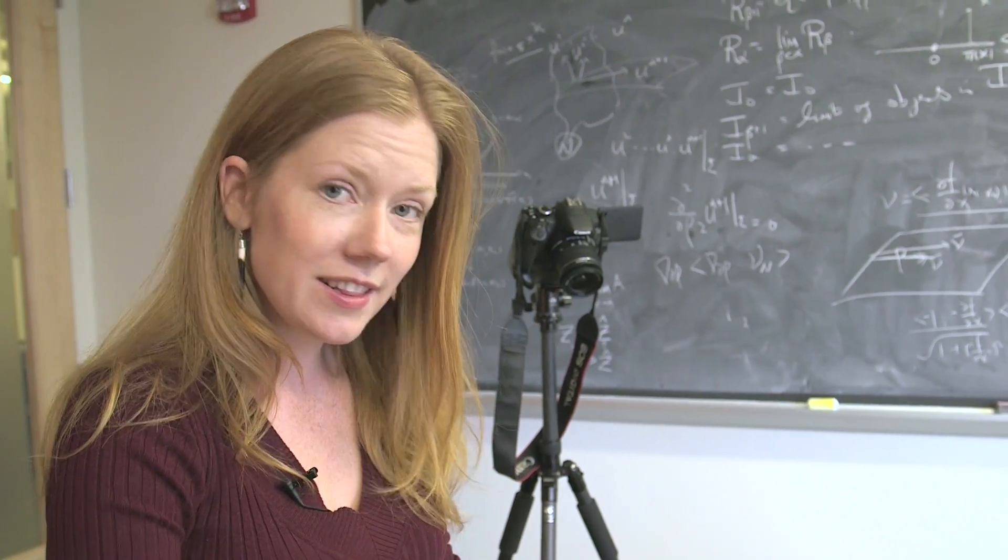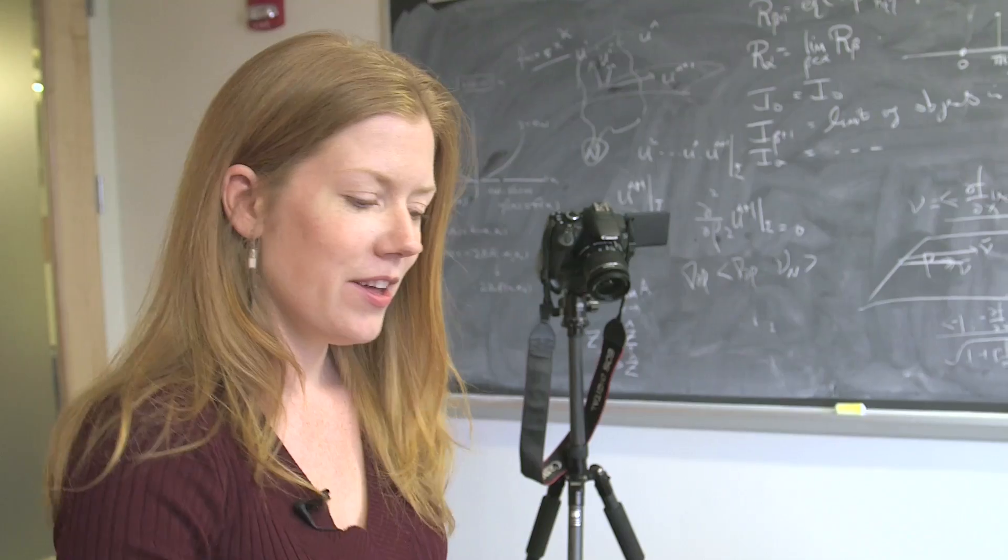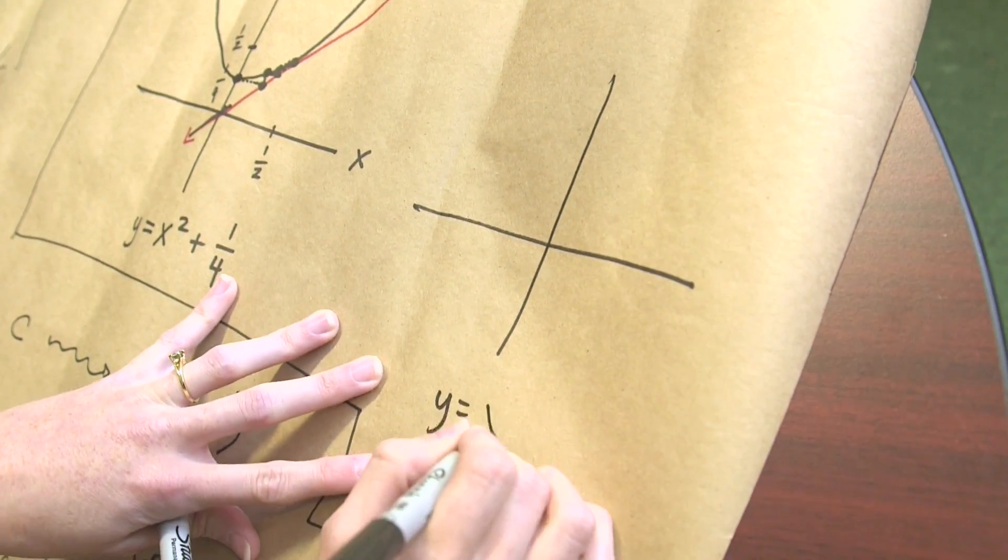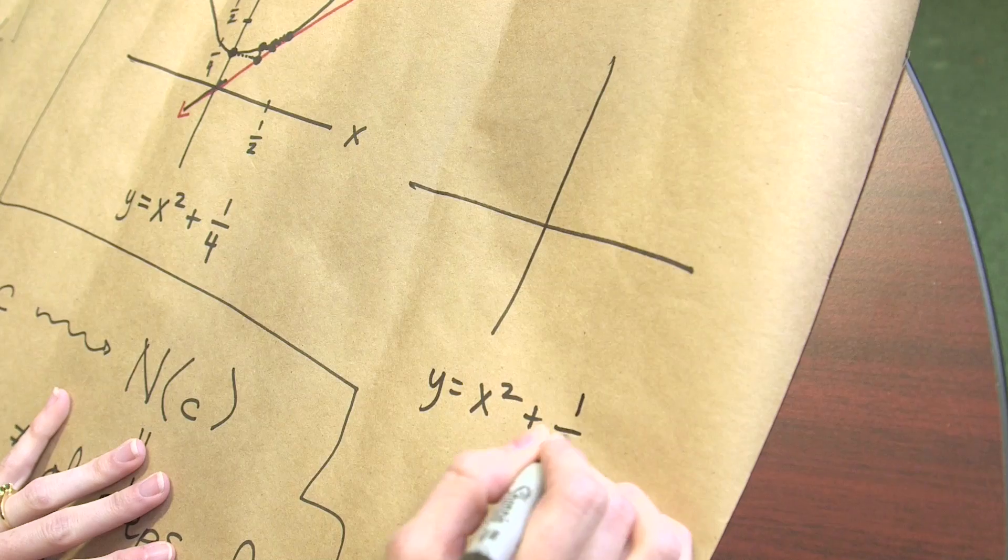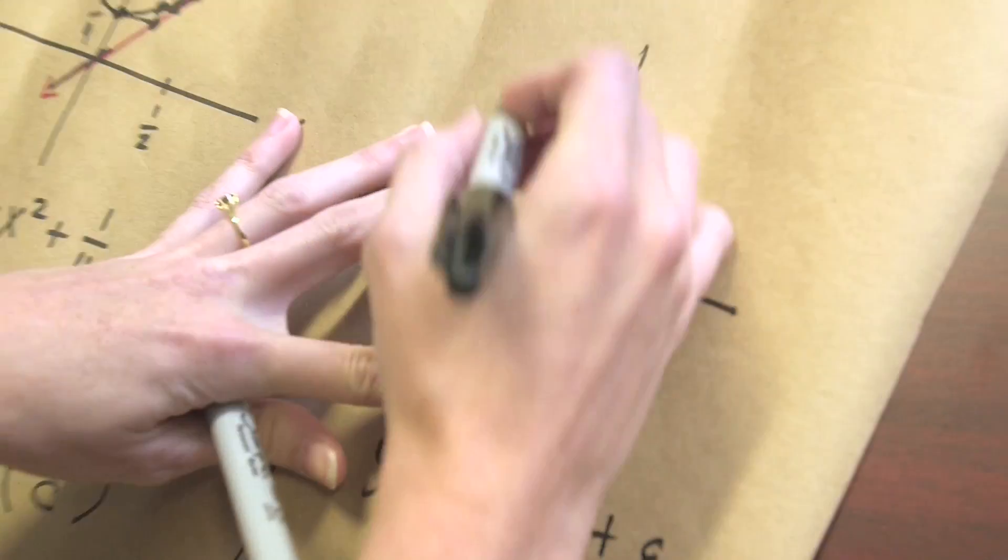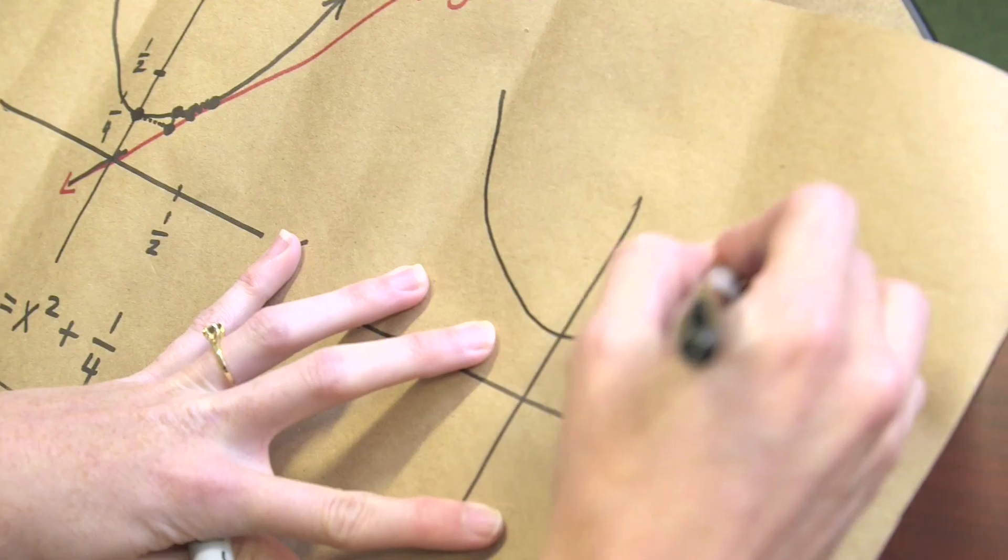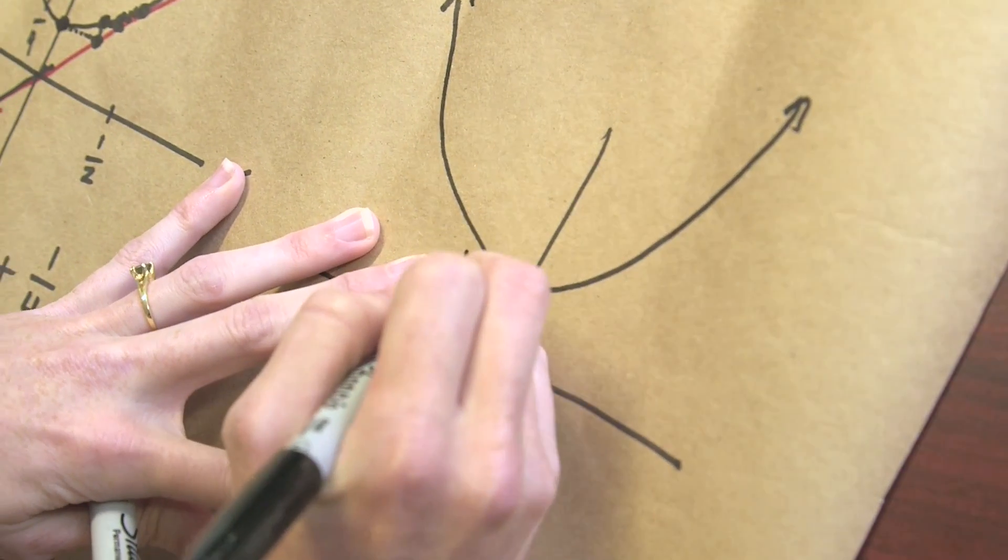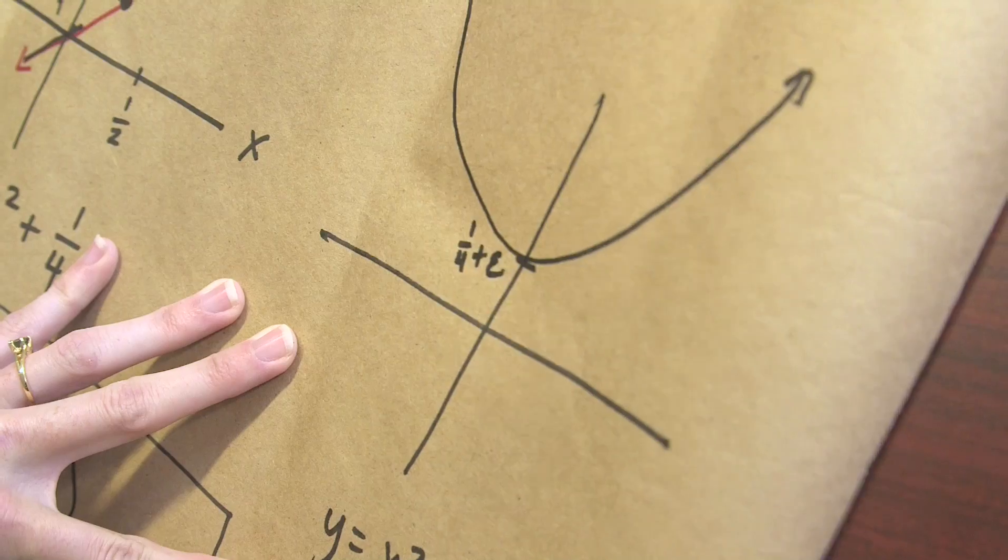And what happens in this particular case when c is one-fourth, you never hit this point where x and y are both equal to one-half. Your staircase just gets closer and closer and closer, and you can never pass it. Now here's the interesting part where you see pi: if you make this value of c a little bit larger than one-fourth again, let's look at the graph. So I'm drawing the exact same thing here, but now the curve is y equals x squared plus one-fourth plus epsilon.